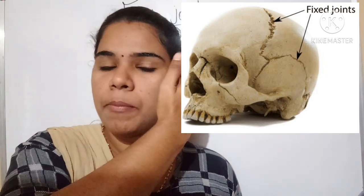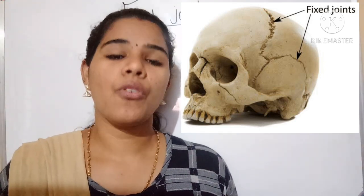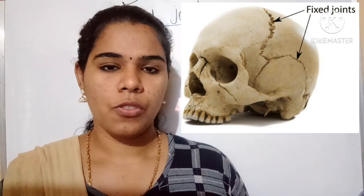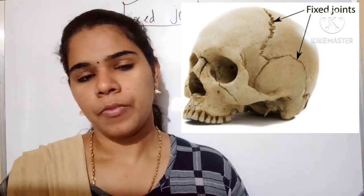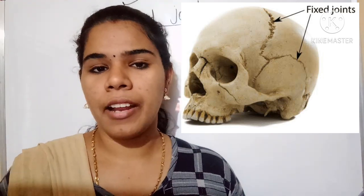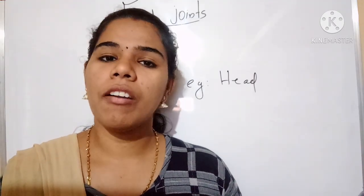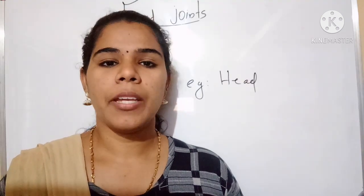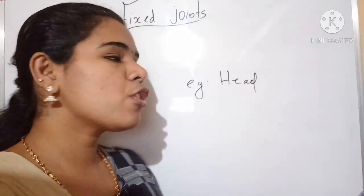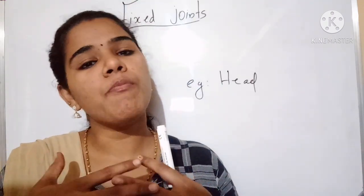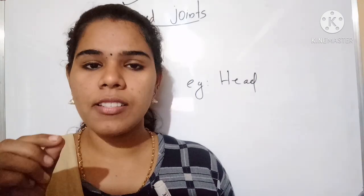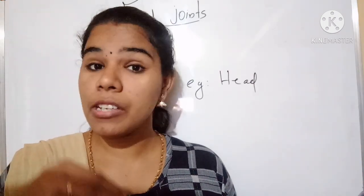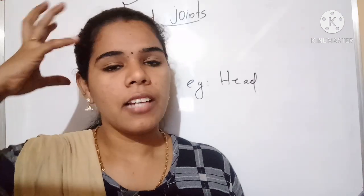We cannot move the upper jaw. So in the head portion, only the lower jaw moves — the remaining portion of the head or skull is fixed, there is no any kind of movement. So this is another type of joint called fixed joints. The function of fixed joints is that they are fixed — no movement occurs because of fixed joints. It is mainly present in the head or skull portion.